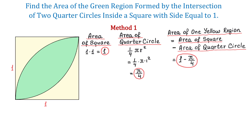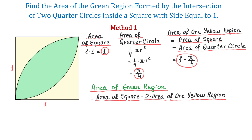In this figure, we have two yellow regions, and each one has the area of 1 minus π over 4. To find the area of this green region, we will take the area of the square and subtract the areas of these two yellow regions. So the area of the green region equals the area of the square minus twice the area of one yellow region, giving us 1 minus 2 times (1 minus π over 4).